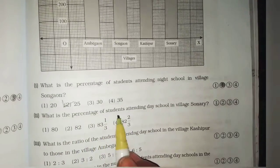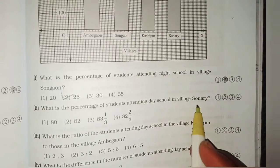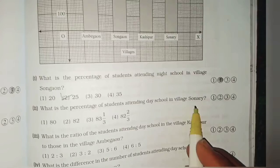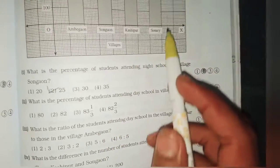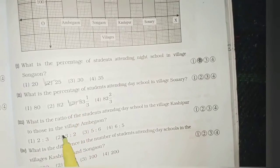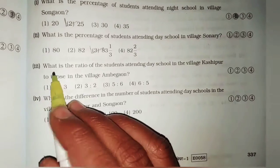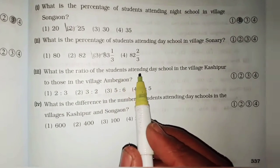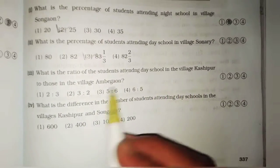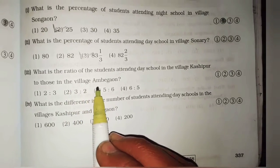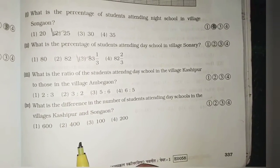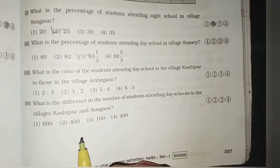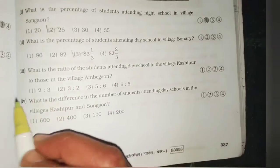What is the percentage of student attending day school in village Kashipur to those in the village Ambegao. Kashipur गावातील सकाळचे school मधील विद्यार्थांचे Ambegao गावातील विद्यार्थांचे गुणोत्तर किती आहे? गुणोत्तर किती आहे? Two by three.